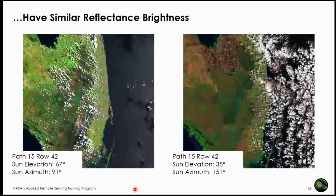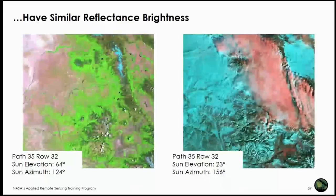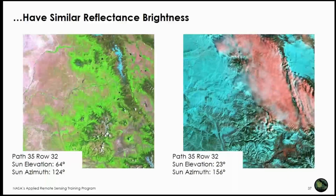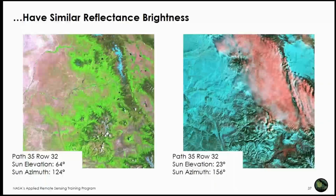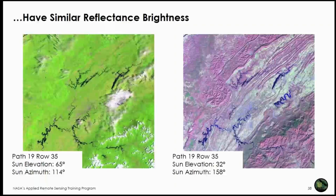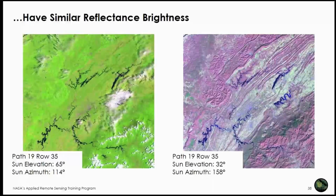Ensure pre- and post-fire images have similar reflective brightness. A large difference in solar elevation or sun azimuth angle between scenes can cause one image to appear much brighter than the other, which will affect dNBR values. Snow in one image but not the other also causes major spectral differences — images with snow in the fire perimeter area should not be paired with snow-free images. Large differences in sun elevation and azimuth between a dormant-season and peak-green-season image make them poor candidates for scene pairing.